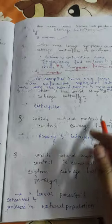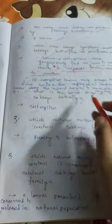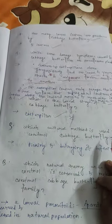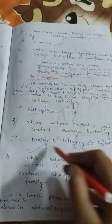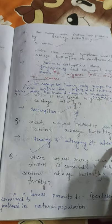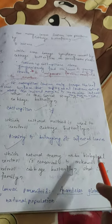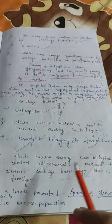First caterpillar instars only scrape the leaf tissue surface, but subsequent instars eat up leaves along the inward margins, leaving the main veins intact. The larval stage of the cabbage butterfly is the caterpillar. Cultural method: picking and destroying infected leaves.